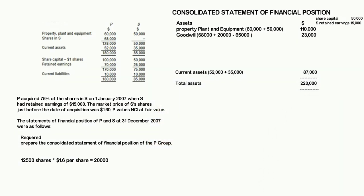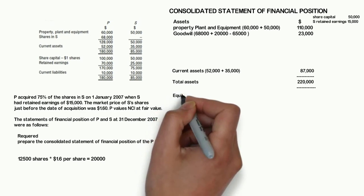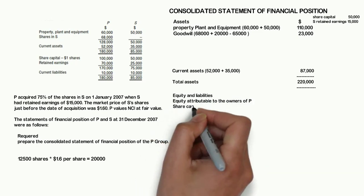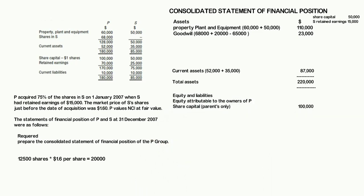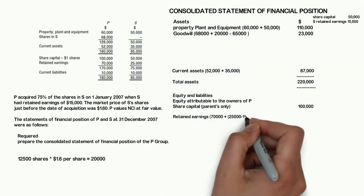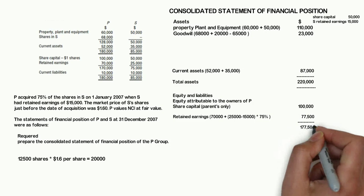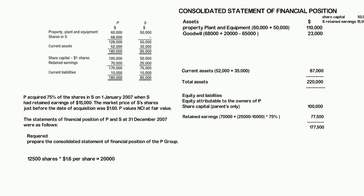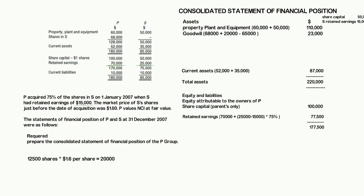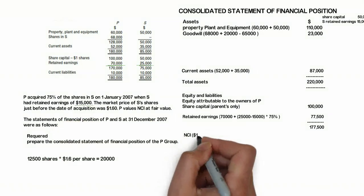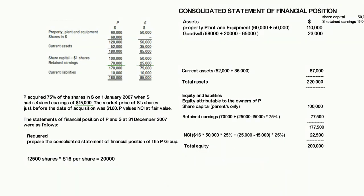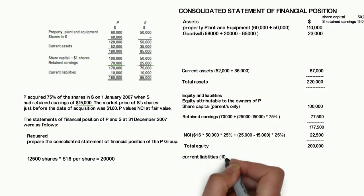Similarly, add up the current assets of both P and S — that is the end of the assets side. Under the equity section, share capital is reported only for P, that is $100,000. Group retained earnings are calculated by adding P's retained earnings of $70,000 plus 75% share of post-acquisition profits of S. The NCI is calculated by adding the fair value and 25% share of post-acquisition profits of S. Finally, add up the current liabilities of both P and S.